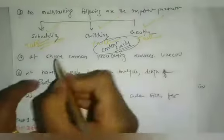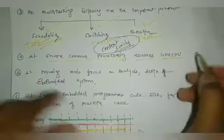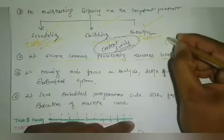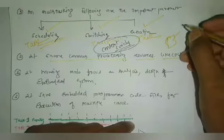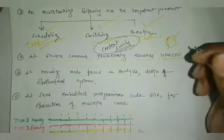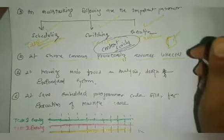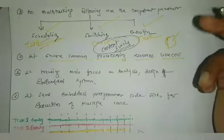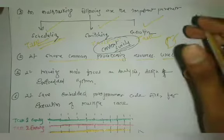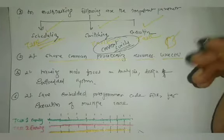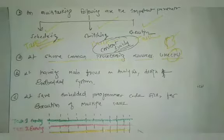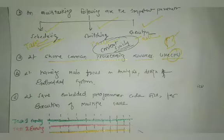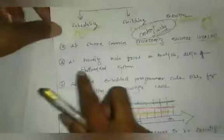Multitasking shares common processing resources such as the CPU. In your computer, multiple operations happen at the same time — you can use Windows, search the internet, enjoy music, and work in Excel all at the same time. This is multitasking, and it always works in RTOS.